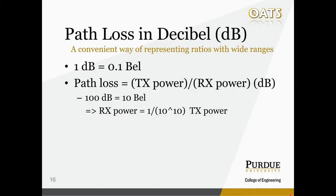Got it? Now, path loss is just the proportion of the transmitted signal power over the received signal power in dB. For instance, it is not uncommon to see a path loss of around 100 dB in cellular communication. 100 dB is 10 bel, so the ratio is 1 followed by 10 zeros, which means the received signal is just a tiny, tiny portion of the transmitted signal.